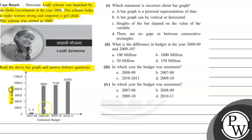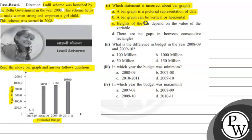Rupees in million — estimated budget. First question: which statement is incorrect about a bar graph? Option A: a bar graph is a pictorial representation of data. Option B: a bar graph can be vertical or horizontal. Option C: height of the bar depends on the value of the variable. Option D: there is no gap in between consecutive rectangles.